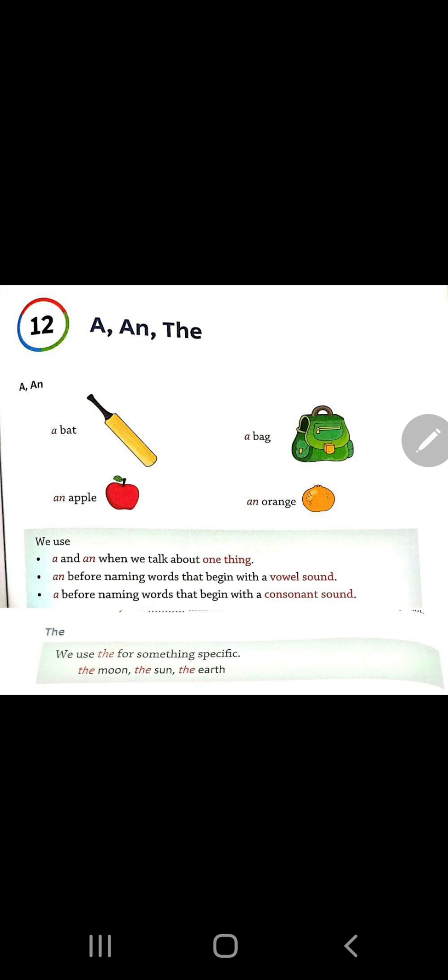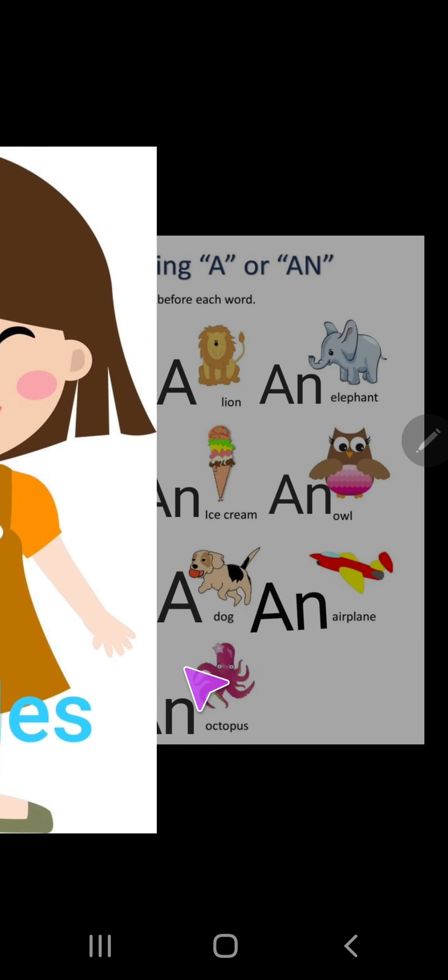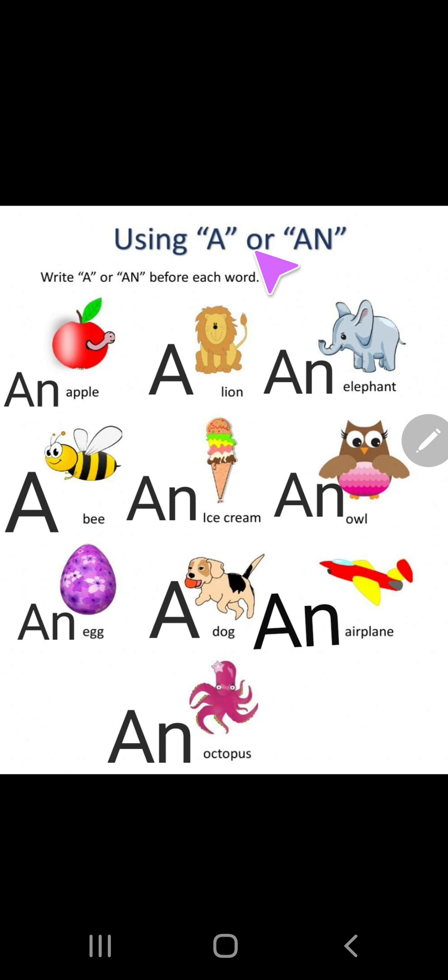So ye jitne bhi hai. Is tari ke. So ham vahan pere kya use karethe hai? The khayuze karethe hai. Let's understand with more examples. Use of a or an. Write a or an before each word. Now you have to see first.